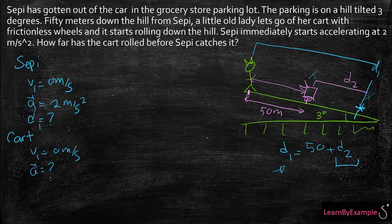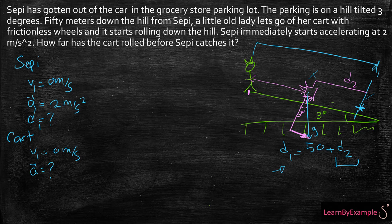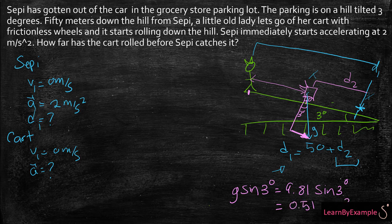So going back to the question, if this angle is 3 degrees, then the component causing the ball to roll down — the pink vector — would just be g times sine of 3 degrees, which is 9.81 times sine of 3 degrees. If you put that in your calculator, you should get 0.51 meters per second squared. So this is basically the acceleration of the cart. The acceleration of the cart is 0.51 meters per second squared. Now we have one more piece of information.